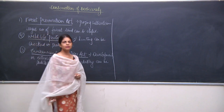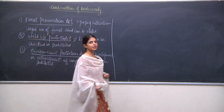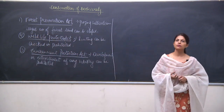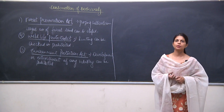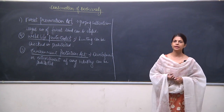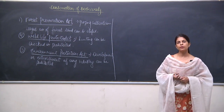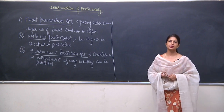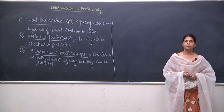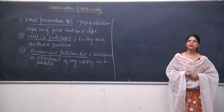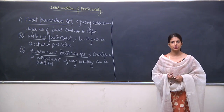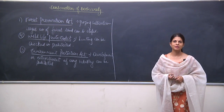To summarize the three laws: the Forest Preservation Act helps the government act against illegal use of forest land such as mining, grazing, or cultivation; the Wildlife Protection Act is mainly against hunting; and the Environment Protection Act protects the environment by controlling industries. With this, the chapter is over and now we will discuss NCERT questions and then move to extra questions so concepts become clearer. Thank you.